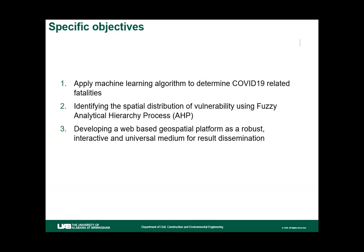We are working on three main objectives. First, we wanted to apply machine learning algorithms to determine if we could predict COVID-19 related deaths or fatalities in the United States. Second, we wanted to apply fuzzy logic to determine a vulnerability index for the United States. Third, both of us have pretty good experience with GIS and web-based platforms, so we wanted to apply that knowledge to our results from this hackathon.